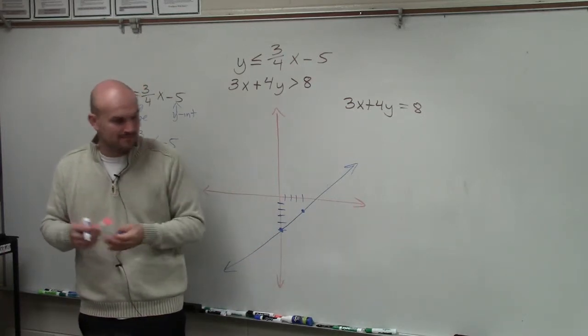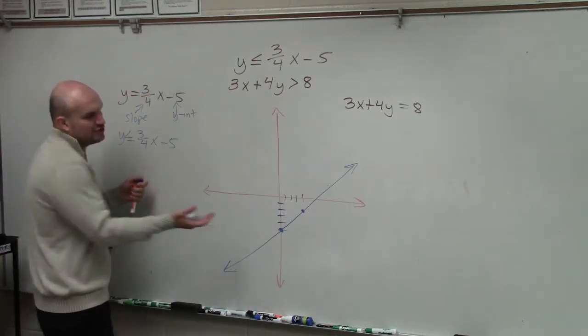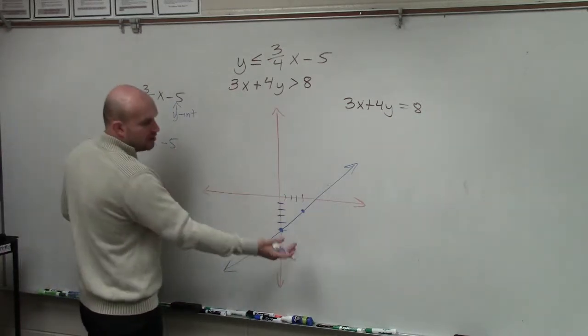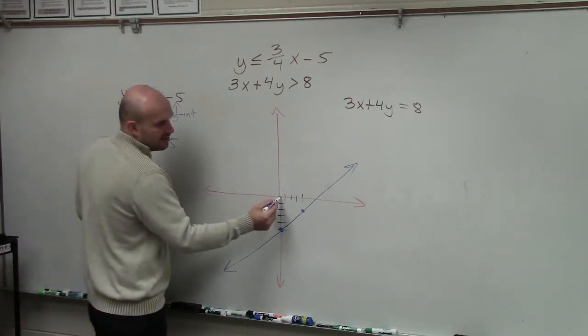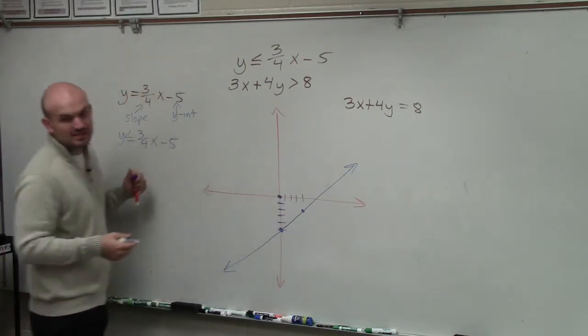Should I shade to the left or should I shade to the right? But here, we need to choose, should I be shading above the line or below the line? So I choose a test point that is not on the line. For instance, the best test point I like to use is 0, 0.